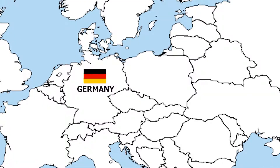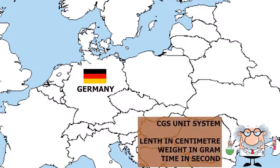In the German community, scientists used centimeter to measure length, gram to measure mass, and second to measure time. This unit system was called the CGS system.